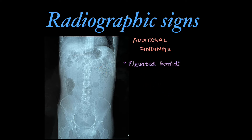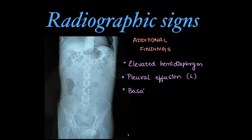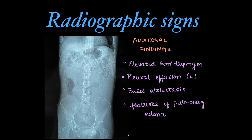Other radiographic findings include elevated hemidiaphragm, pleural effusion more commonly on the left side, basal atelectasis, and features of pulmonary edema.